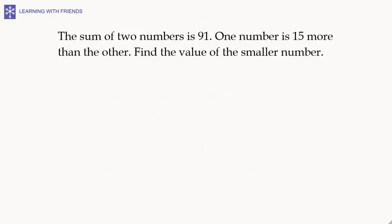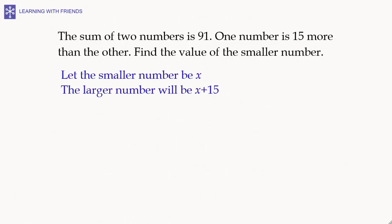For such questions, we assume one of the quantities as x. Let the smaller number be x. Since the other number is 15 more than this number, the larger number will be x plus 15. It is given that the sum of these two numbers is 91, which means the equation is x plus (x plus 15) equals 91, which reduces to 2x plus 15 equals 91.